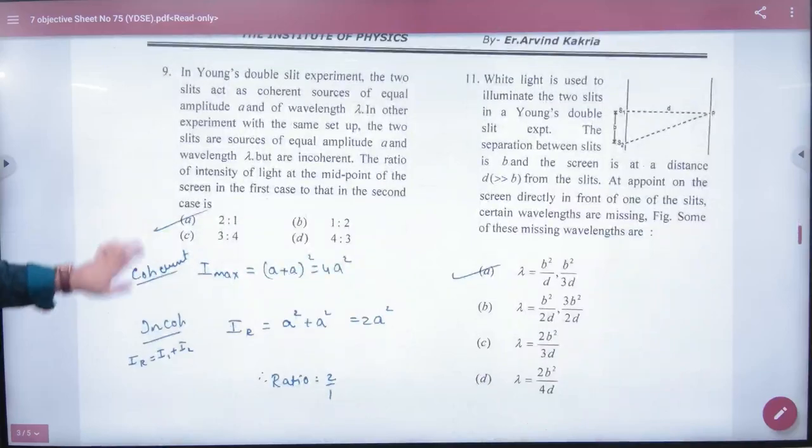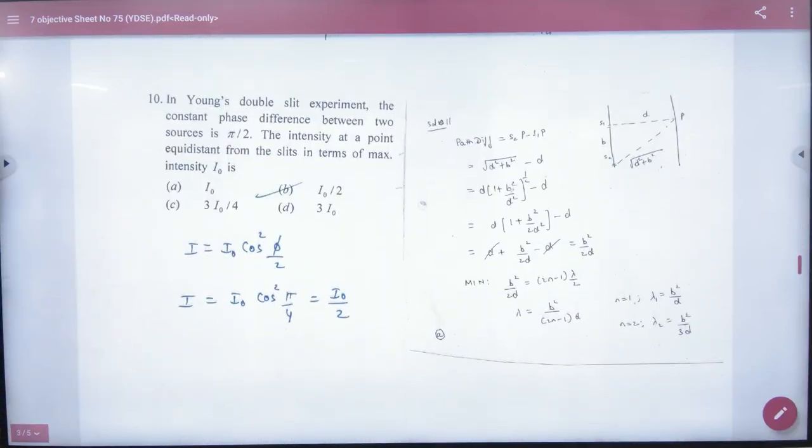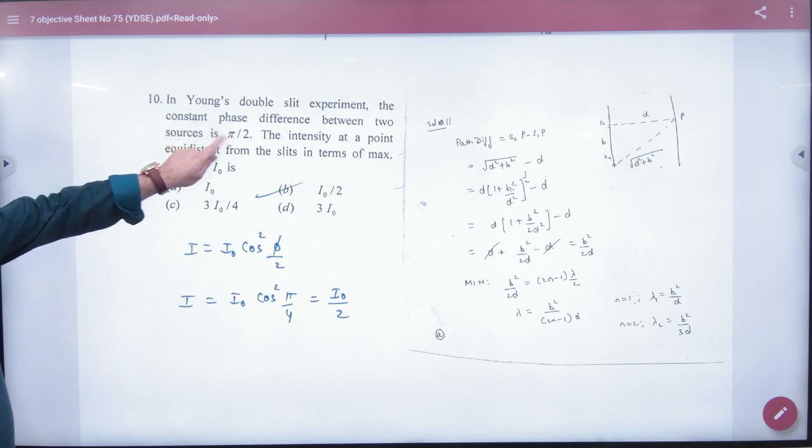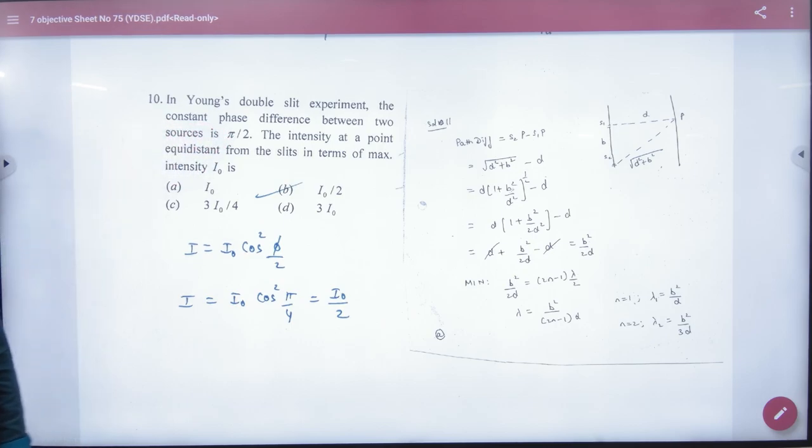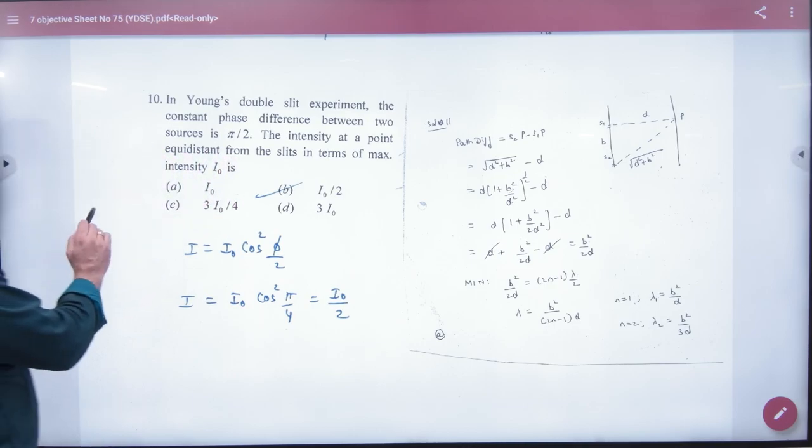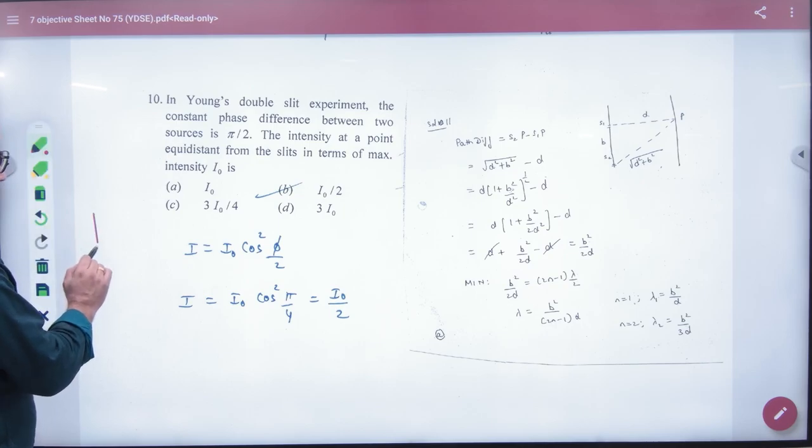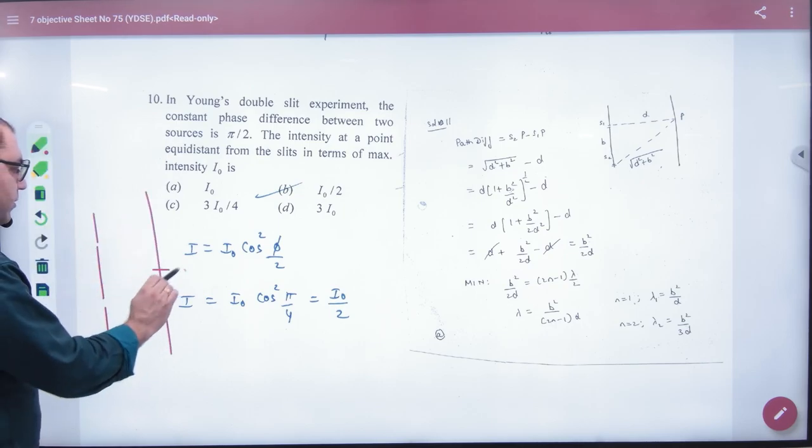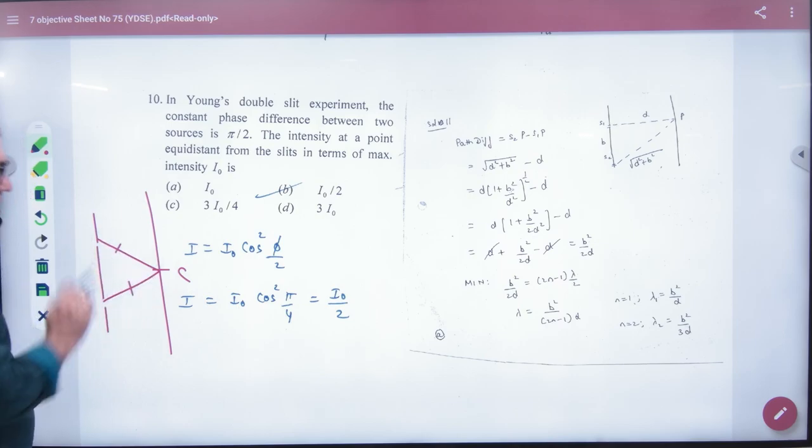After 9, question number 10. In Young's experiment, constant phase difference between two sources φ given by π/2. Intensity at point equidistant from slits. Which point is equidistant? What do you call the center point? Equidistant.